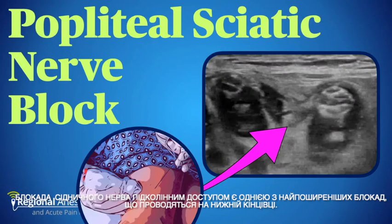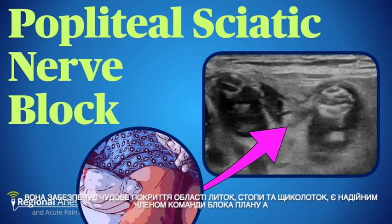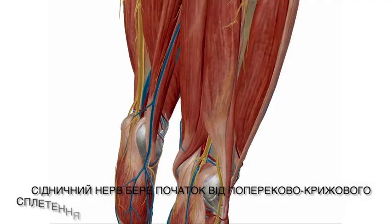The popliteal sciatic nerve block is one of the most common blocks performed on the lower limb. It provides excellent coverage of the calf, foot, and ankle and is a solid member of the plan A block team.